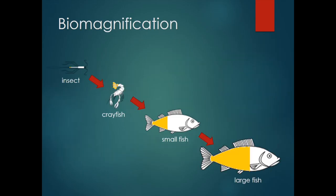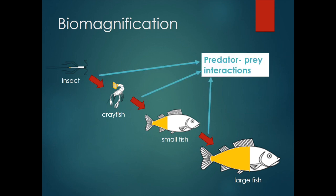Remember, bioaccumulation occurs over time in an organism, but biomagnification explains how contaminants move in a food web. These red arrows represent a predator-prey interaction, or when a higher trophic-level organism eats a lower trophic-level organism. A crayfish can eat an insect with minimal contamination, but it will probably have to eat several insects to survive, which leads to a higher contaminant concentration. This same event occurs along each level of the food web, with each level receiving a higher contamination concentration than the last.